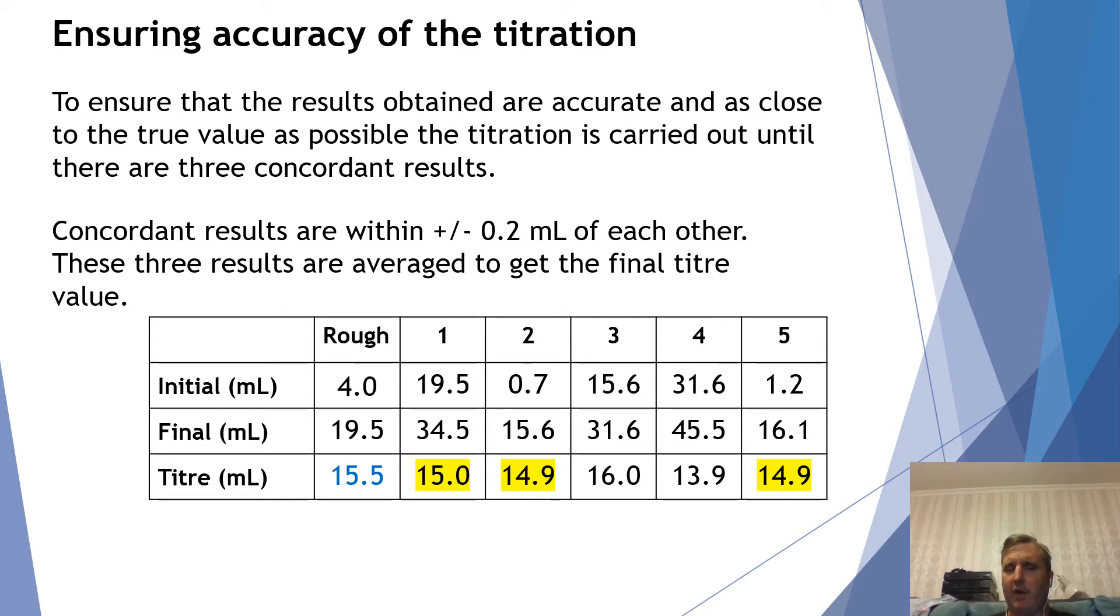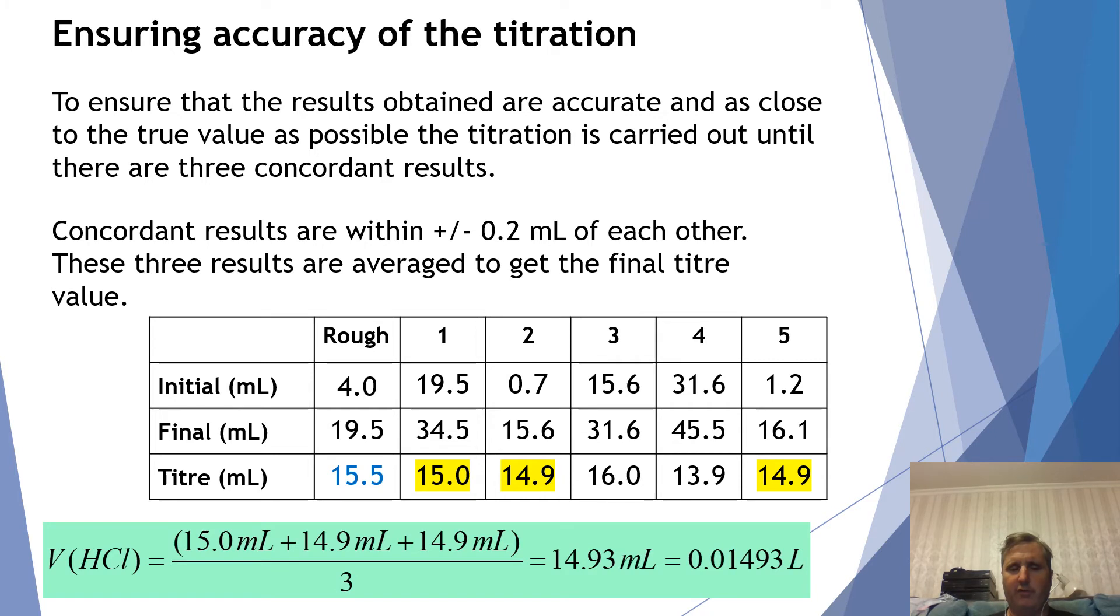These are the final results I will use to get the titer for this titration or what is the amount of solution I had to add from the burette to neutralize the solution that was in the conical flask. Now to average this I take the three concordant results, add them up and divide by three and I get an average in this case 14.93 milliliters.